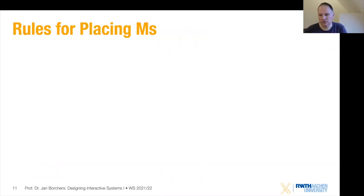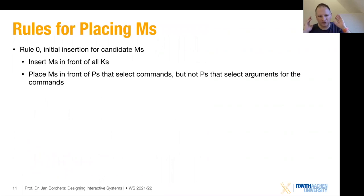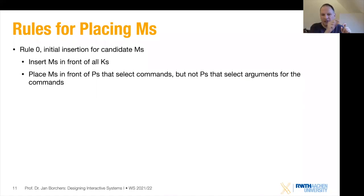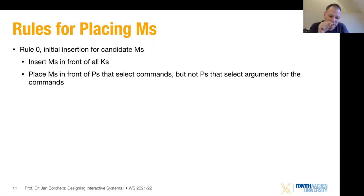Here are the rules. First, we insert Ms in front of all key presses. Every single key press gets a mental preparation in front of it — almost as if somebody is preparing for every single key to press, like a very slow typist. We also place Ms in front of all pointing commands that select commands, such as if you're selecting a menu item to open a file. But if there are pointing actions that select just arguments for these commands, we don't insert Ms there.